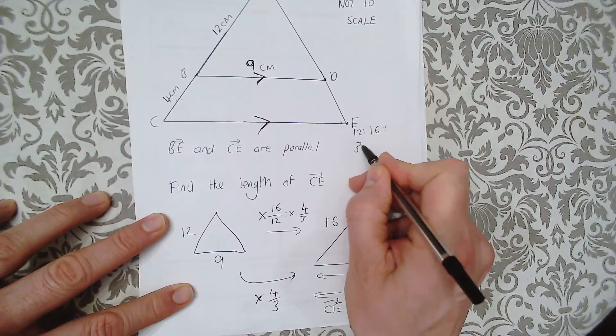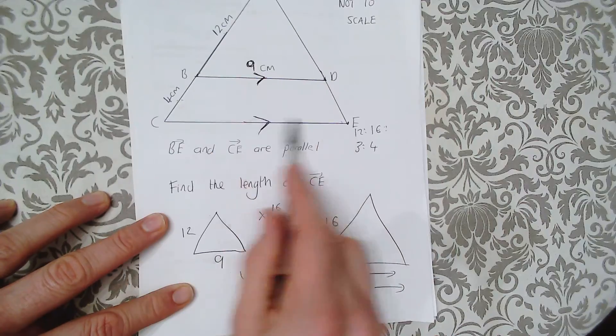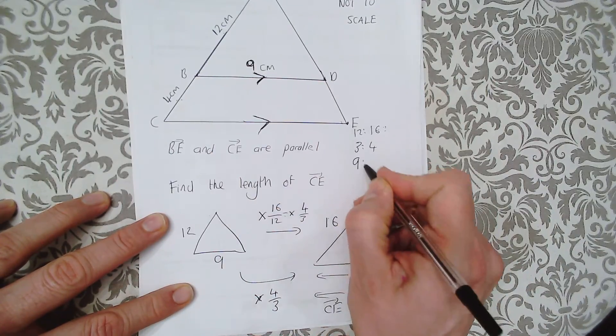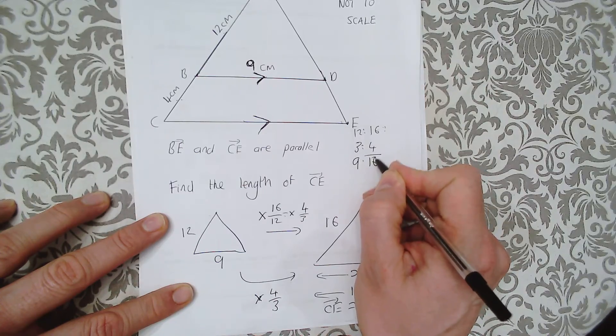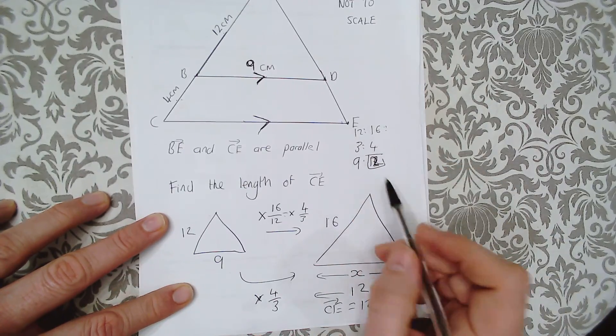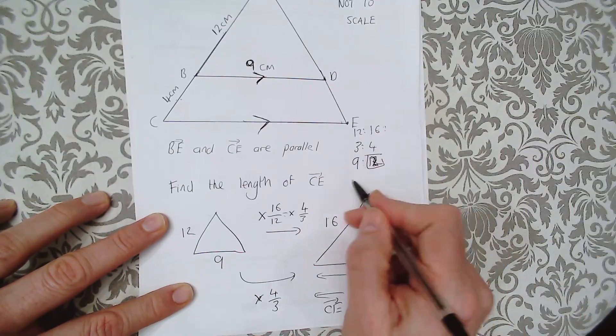This simplifies to 3 to 4, and this length 9 to 12 is the same ratio. So 3 to 4, 12 to 16, 9 to 12—they're all the same ratio, and that's just dealing with length ratios.